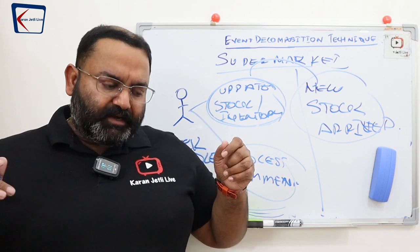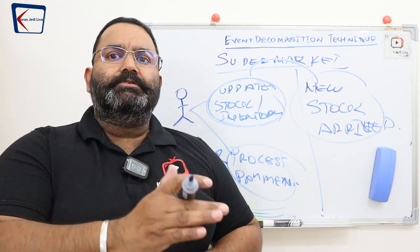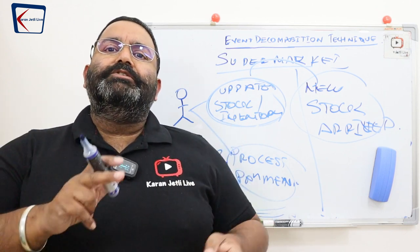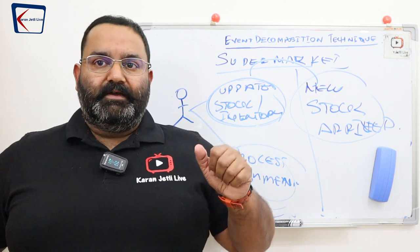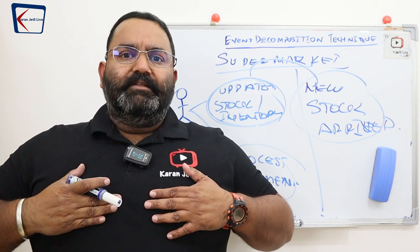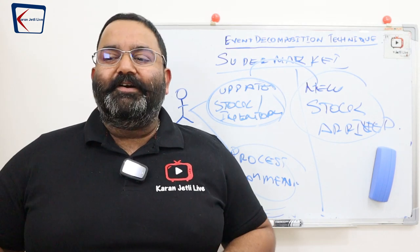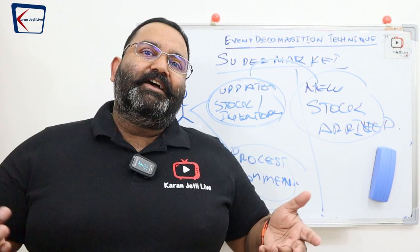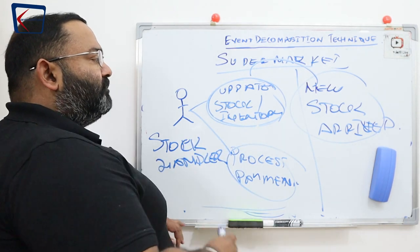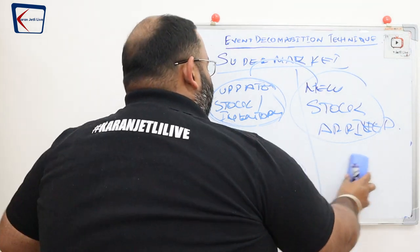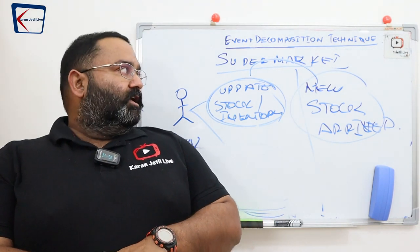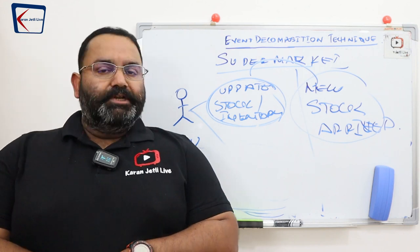In event decomposition technique, you track the sequence of events, identify which events are relevant — meaning your system must respond to them — and then identify the use cases needed in response. Customer walks in or parks his car — not relevant. Customer buys a product — relevant; cashier makes invoice and processes payment. New stock arrived — relevant; stock handler updates inventory. So this is called event decomposition technique.